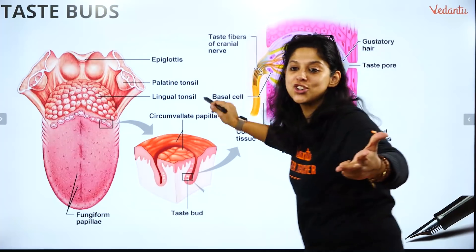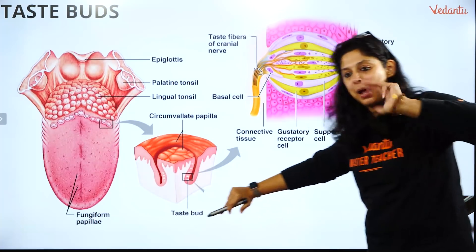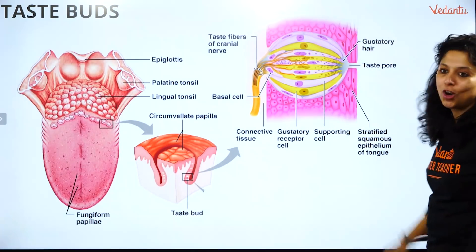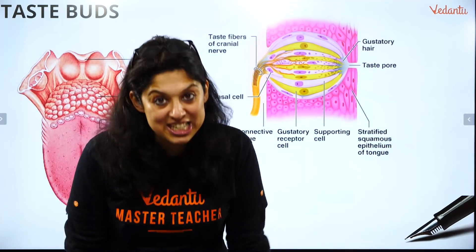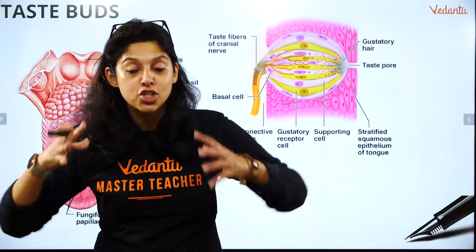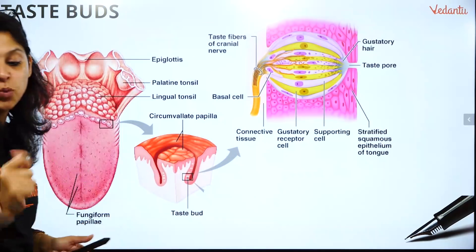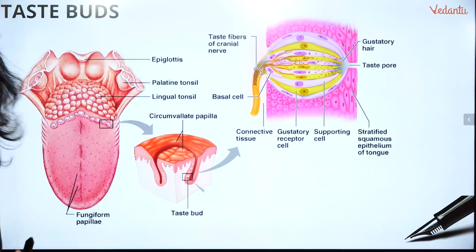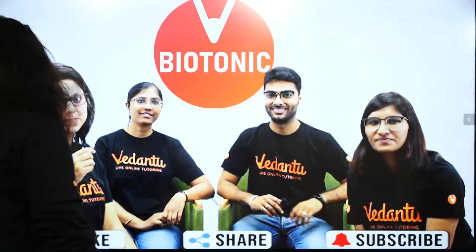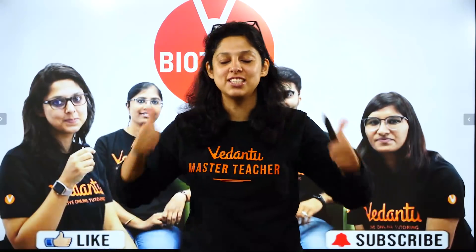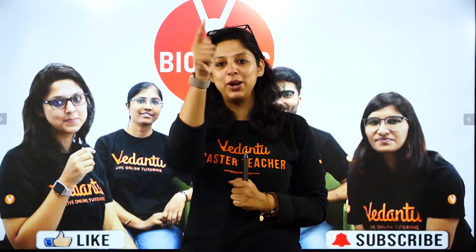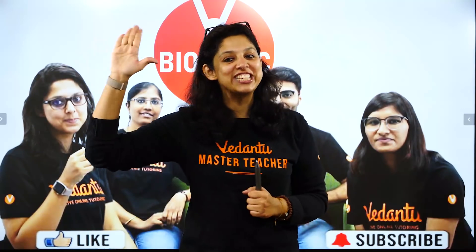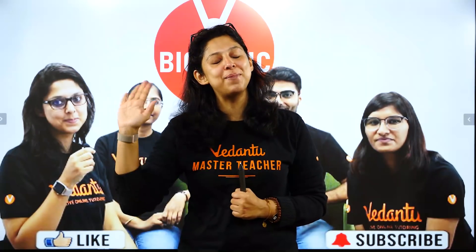MCQ summary: circumvallate papillae MCQ, sulcus terminalis MCQ, Waldeyer's ring MCQ, fungiform papillae MCQ, glossopharyngeal and hypoglossal nerve MCQ, taste bud sensation is called gustation — MCQ! So much knowledge in one class. Please like, share, and subscribe. I hope you're enjoying the Diagramology series as much as we enjoy bringing it to you. Take care, see you in the next class — bye kids!